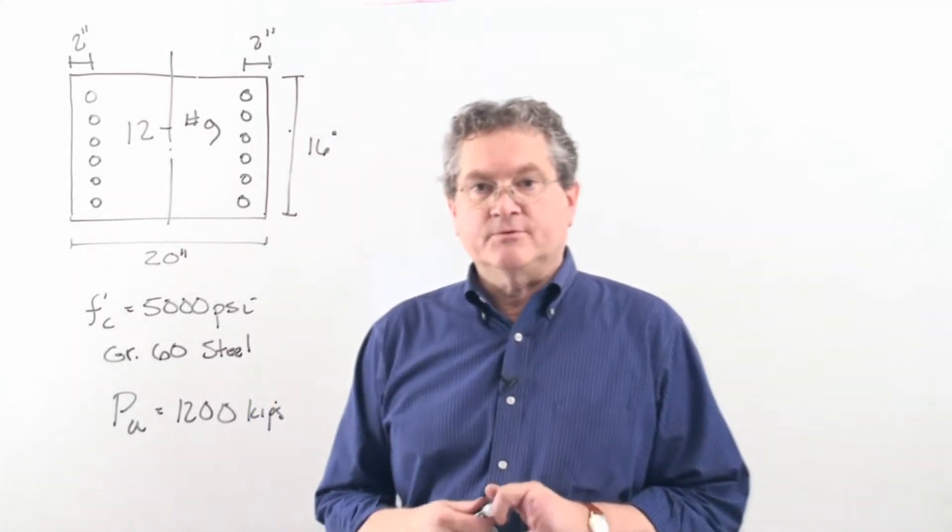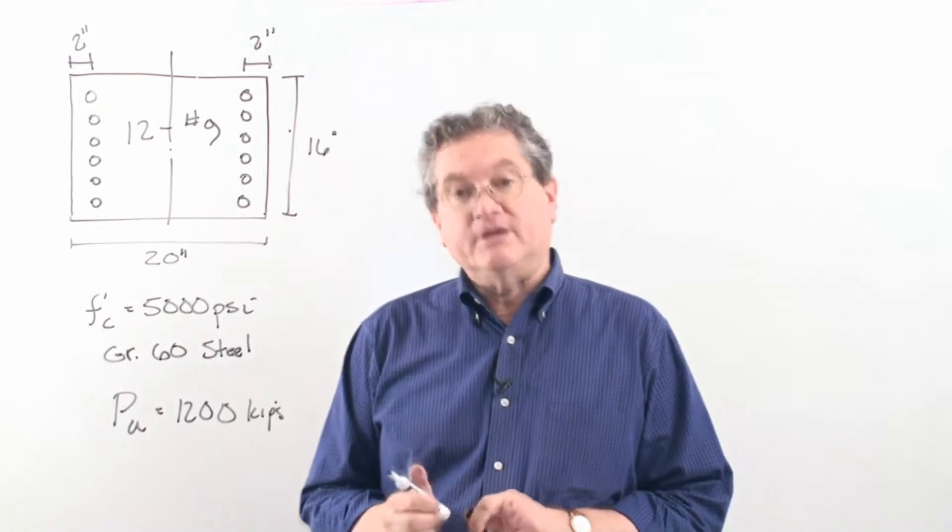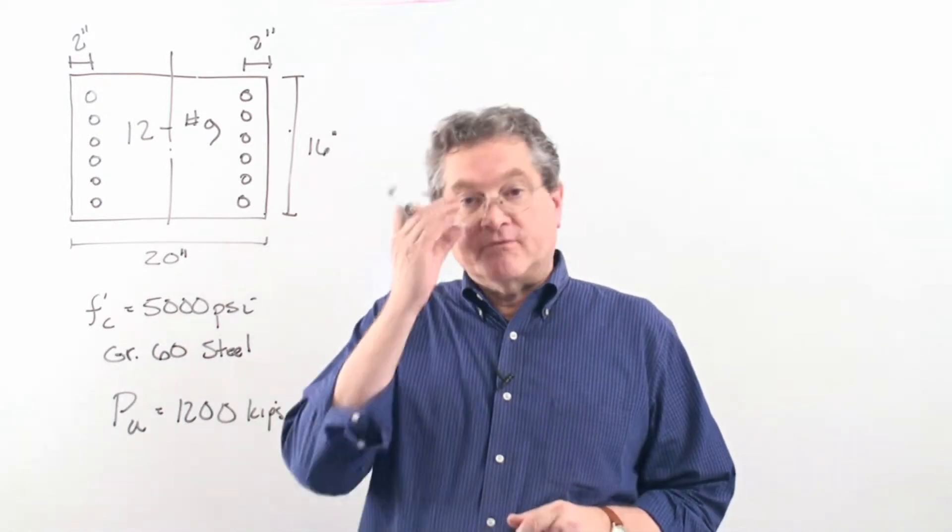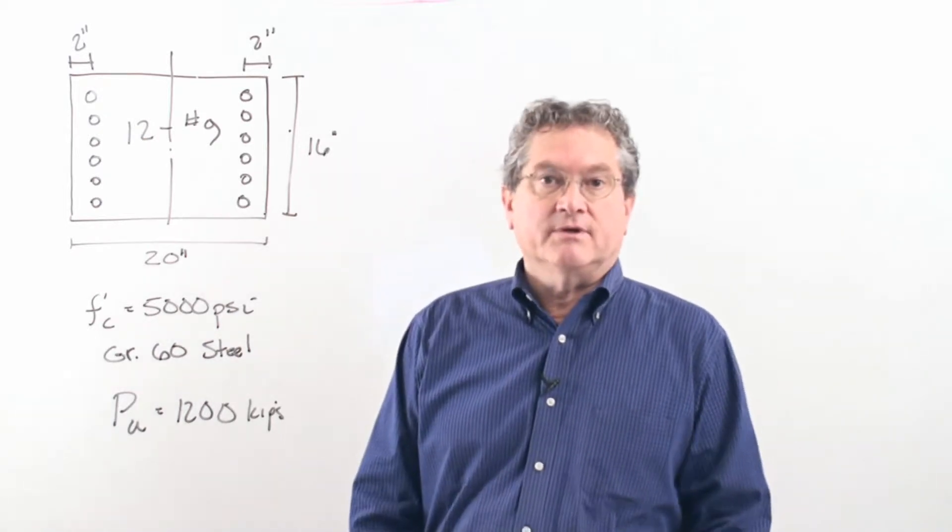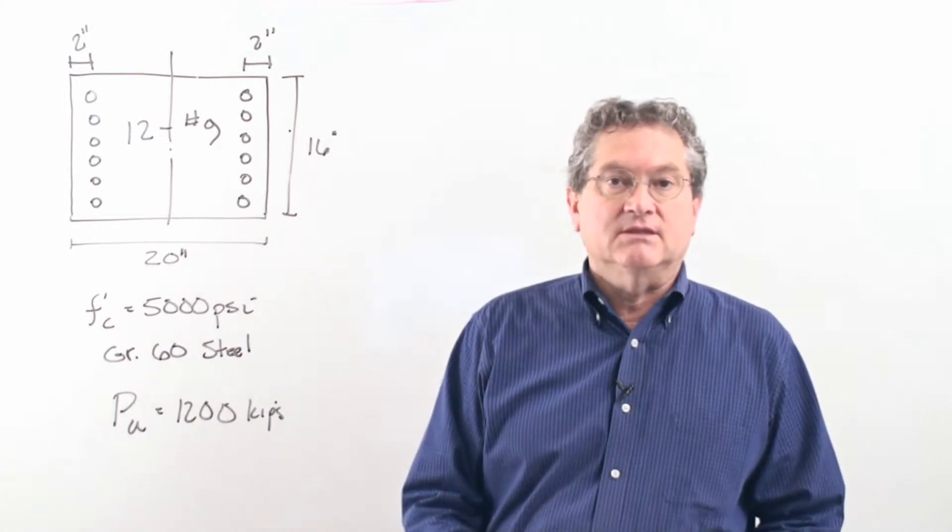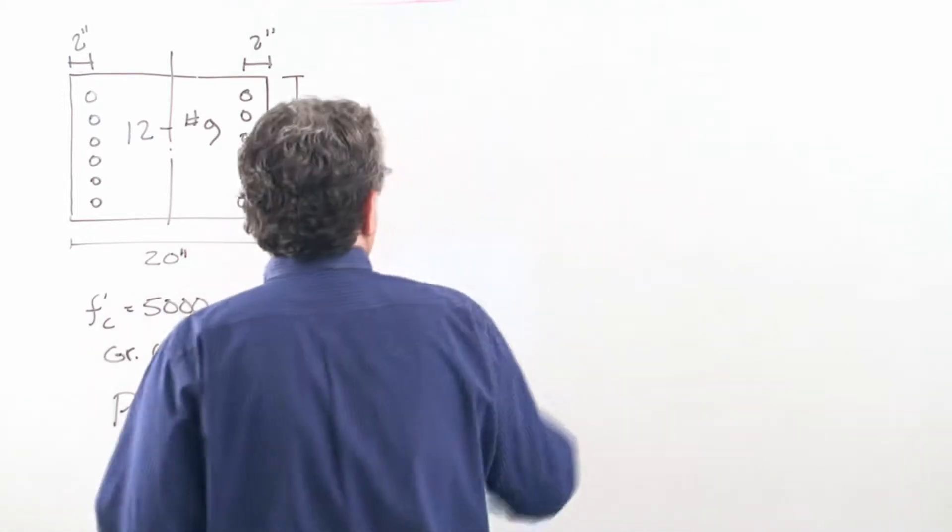Let's look at this example. First thing we need to do is calculate that gamma value to see whether or not we have a valid cross-section for our interaction diagram.